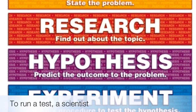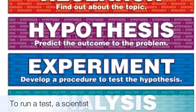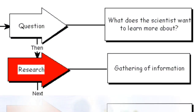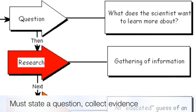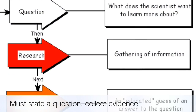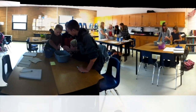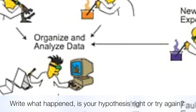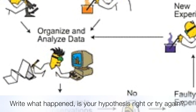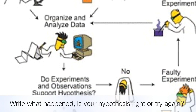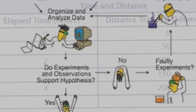To run a test, a scientist must lead a question, collect evidence, experiment, write what happened. Is your hypothesis right, or try again?